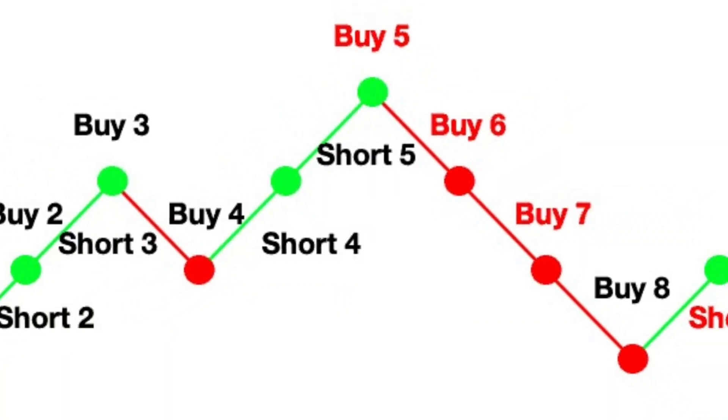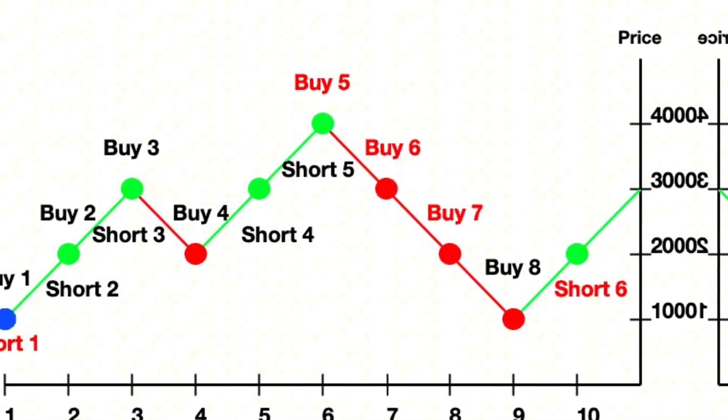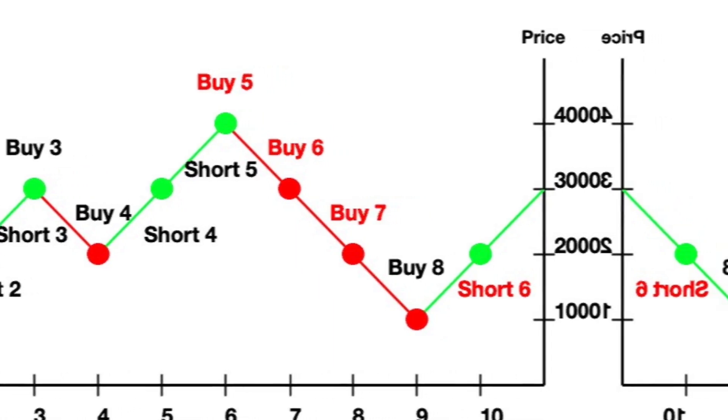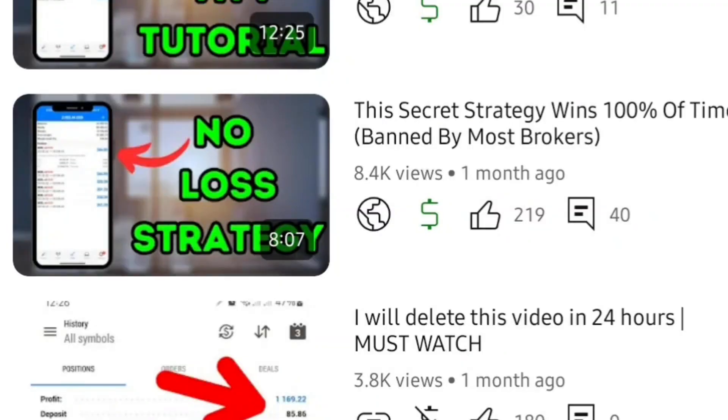Three months later I found two systems. The first one was a grid system and the second one was a zone recovery system. A grid system buys and sells at the same time — if the market goes up it buys and sells again at another level to cover the losses of a losing trade and take profits on the winning trade. When the market drops again, you buy again, cover the losses of the losing trade, and also cover the first trade, ending up with profits. I'll leave a link on screen with a video explaining how it works.